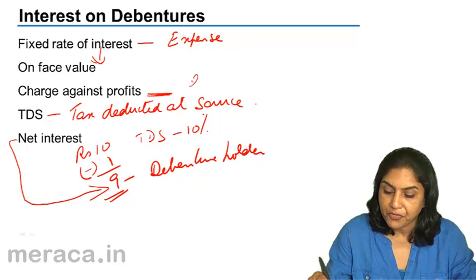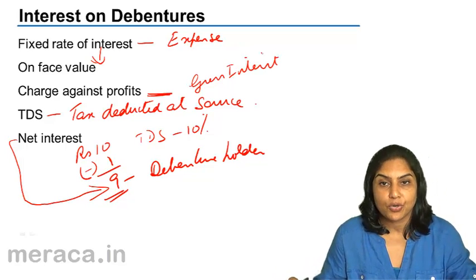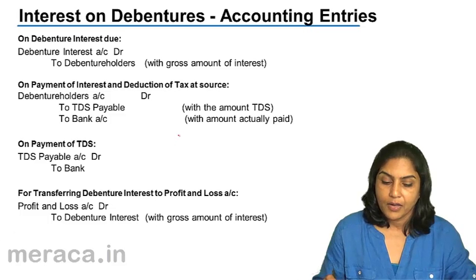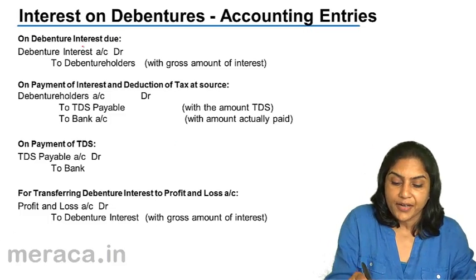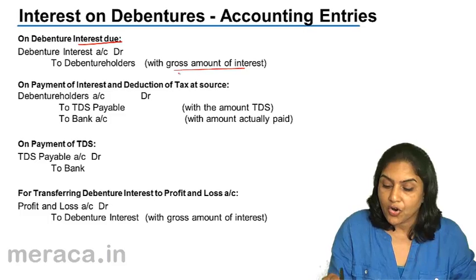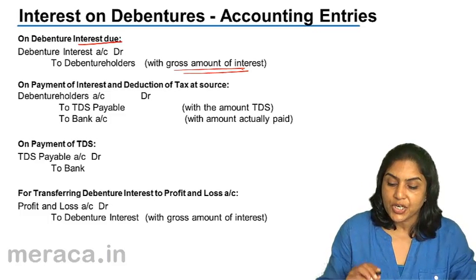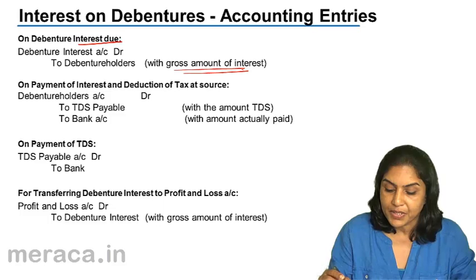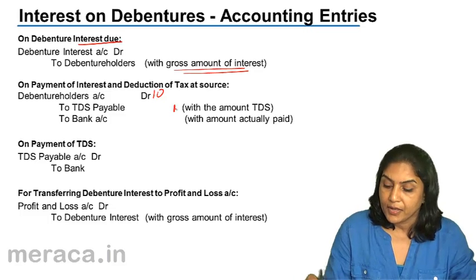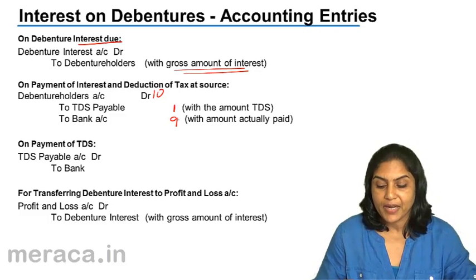The charge against profit is the total gross interest; net interest is the amount that the debenture holders get. Let us look at the accounting entries. When debenture interest becomes due: debenture interest account debit to debenture holders with the gross amount of interest. Then when interest is to be paid, suppose the amount is ₹10: debit debenture interest account, credit TDS payable ₹1, and credit bank ₹9 — the money actually paid out of the bank.